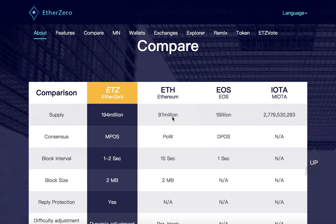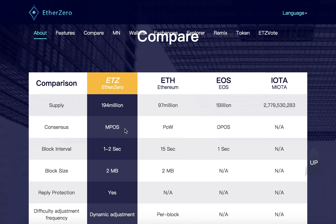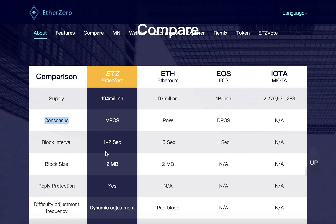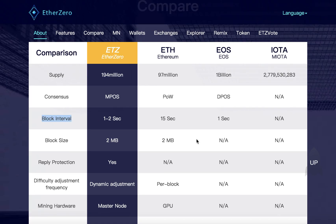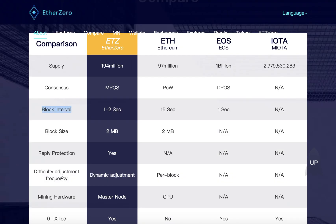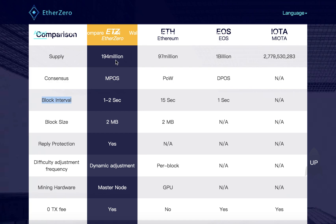On this table you can find a comparison of Ether0, Ethereum, and other blockchain projects like EOS and IOTA. You can find differences in consensus, block interval, and block size — which are equal for Ether0 and Ethereum. Regarding fees, Ether0 has zero transaction fees, whereas Ethereum has fees in the form of gas.